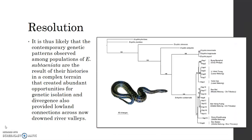It is thus likely that the contemporary genetic patterns observed among populations of E. subteniata are the results of their histories in a complex terrain that created abundant opportunities for genetic isolation and divergence, and also provided lowland connections across now-drowned river valleys. From this dendrogram, we can see that the snakes collected from different areas are slightly different genetically.